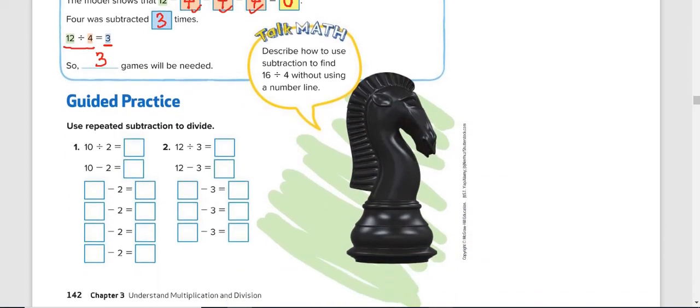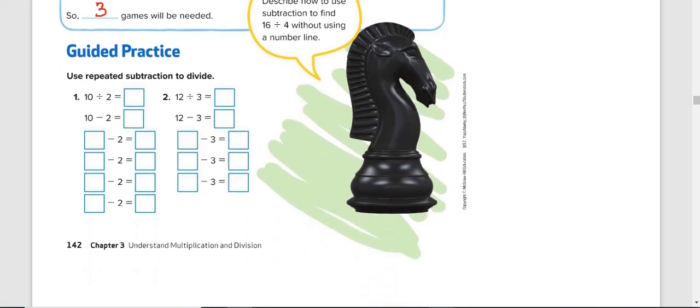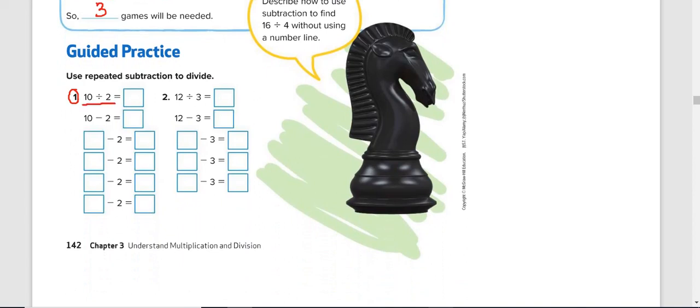Alright, give it a try. Do this guided practice. It's very easy. What will be 10 divided by 2? So follow these subtraction steps. 10 minus 2 is 8. I put the 8 here. 8 minus 2 is 6. 6 minus 2 is 4.